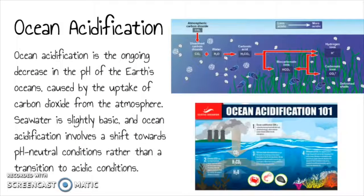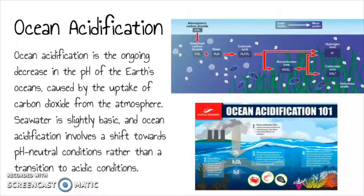Ocean acidification is the ongoing decrease in the pH of Earth's oceans caused by the uptake of carbon dioxide from the atmosphere. Seawater is slightly basic, and ocean acidification involves a shift towards pH neutral conditions rather than a transition to acidic conditions. Our continued burning of fossil fuels is increasing the levels of carbon dioxide in the atmosphere, and most of the carbon dioxide released ultimately ends up in the oceans. Consequently, the oceans have been absorbing large amounts of carbon dioxide ever since the Industrial Revolution started, which was approximately in 1750, and it is this increasing amount of CO2 that is causing ocean acidification.